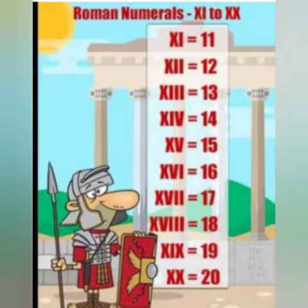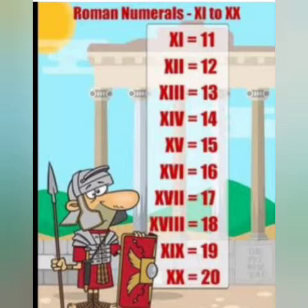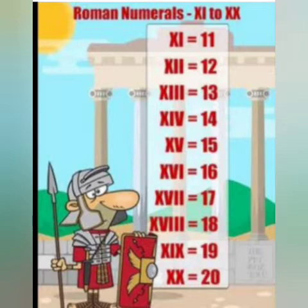Dear students, let's revise the numerals 11 to 20. For 11 to 20, the same 3 numerals X, I, and V will work. If we have to write 11, it is X and I — 10 plus 1. For 12, it is 10 plus 2, so X and II. For 13, X and III. For 14, it is X for 10 and IV for 4.